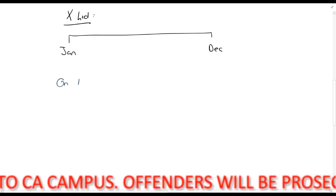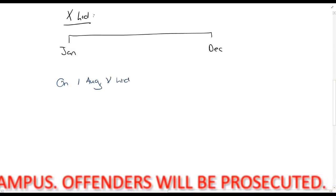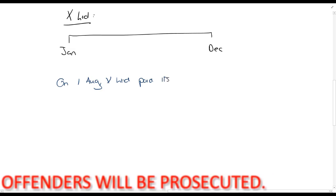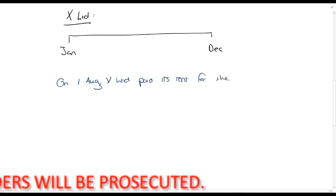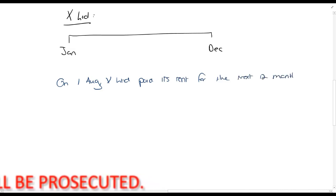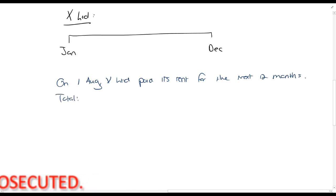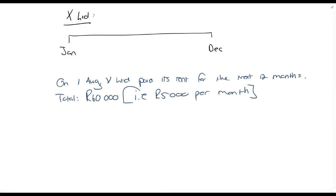On the first of August, X Limited paid its rent for the next 12 months. The total was 60,000 rands, so that means 5,000 rands per month. The first of August is where we are paying, and we will be paying up until the end of July of the next year. August until December, five months, is in the current year, and seven months has been prepaid.